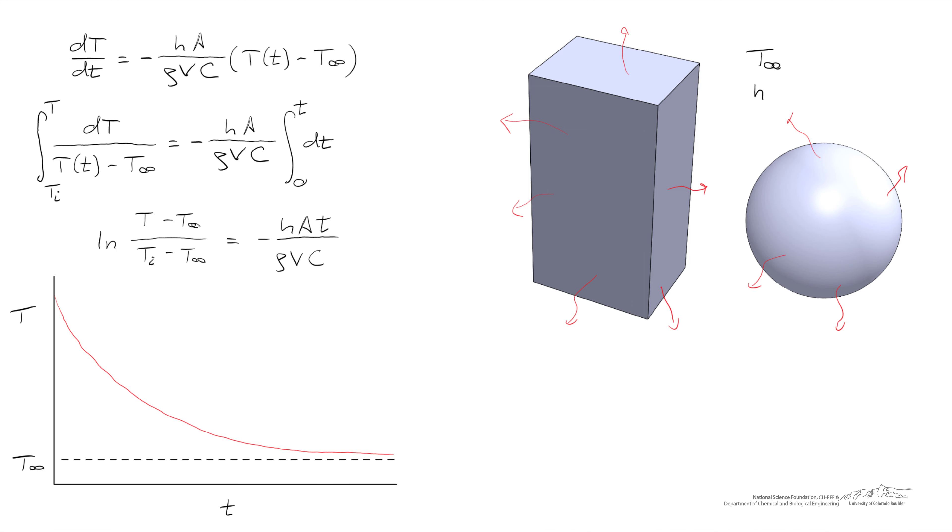Let's take a moment to check the units in our expression. Because the left hand side is a dimensionless quantity, the right hand side had better be dimensionless as well. Let's start with the heat transfer coefficient. H is units of watts, or joules per second per square meter Kelvin. Area has dimensions of meters squared. Time has dimensions of seconds. Density, one over the density is cubic meters per kilogram, one over the volume is one over meters cubed.